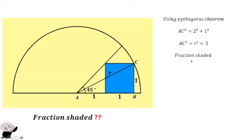Now, how can you find the fraction shaded? The fraction shaded equals the area of the square, the blue square, divided by the area of the semicircle.